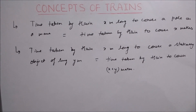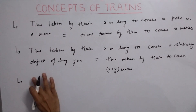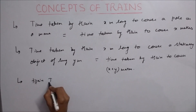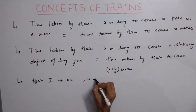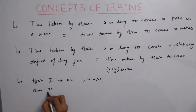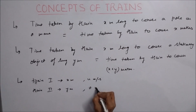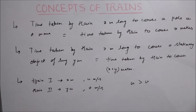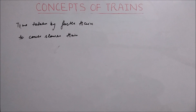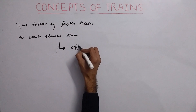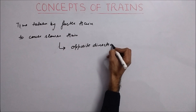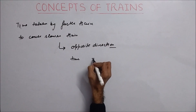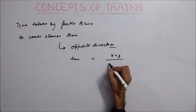The third question type is the crossing of trains. Train one has length x meters and travels at speed u meters per second; train two has length y meters and travels at speed v meters per second, with u greater than v. There are two conditions: if they are travelling in opposite directions, the time taken by the faster train to cross the slower train equals the sum of their lengths divided by their relative speed u plus v.